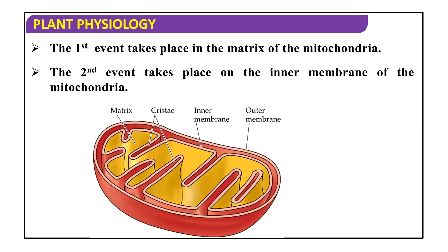This is the structure of mitochondria. We have the outer membrane and this is the inner membrane. Then this yellow portion — this all is matrix. And these are the cristae. Cristae are the invaginations of the inner membrane only. So here on the inner membrane there is synthesis of ATP, and on the outer membrane there is formation of three molecules of carbon dioxide.